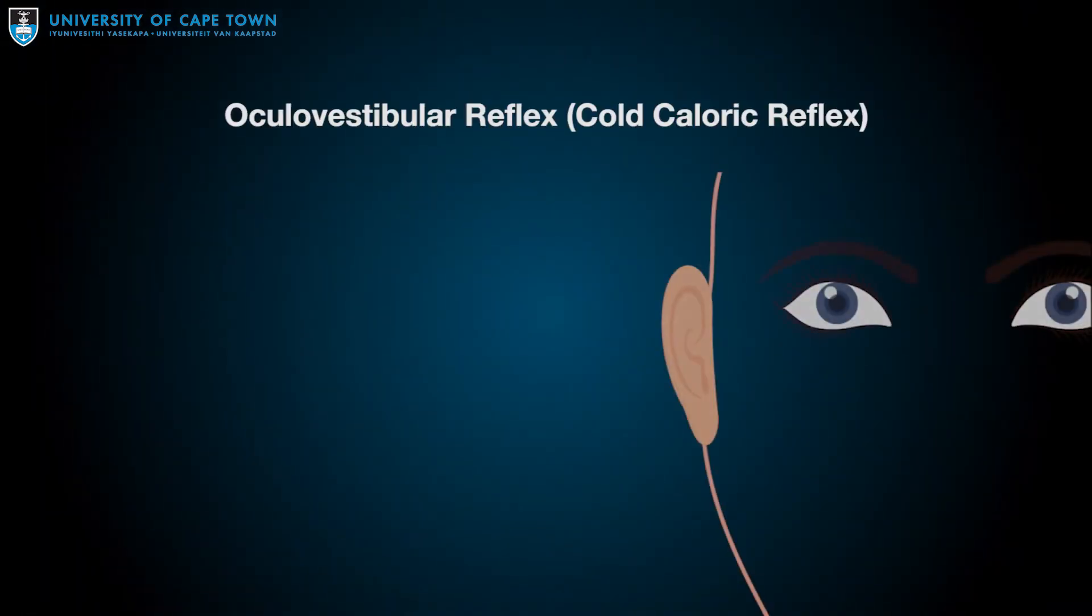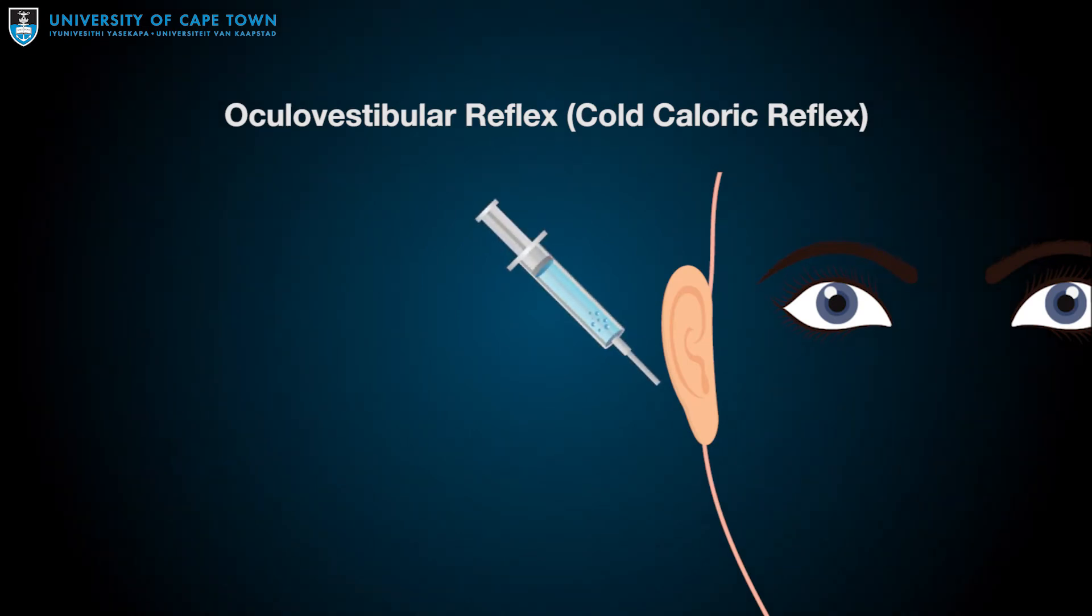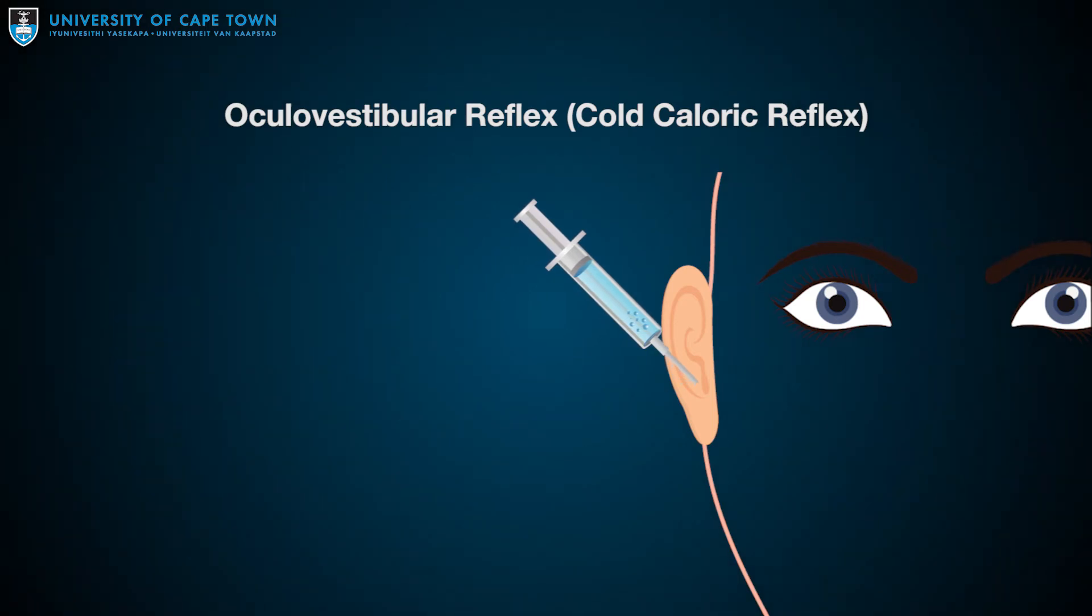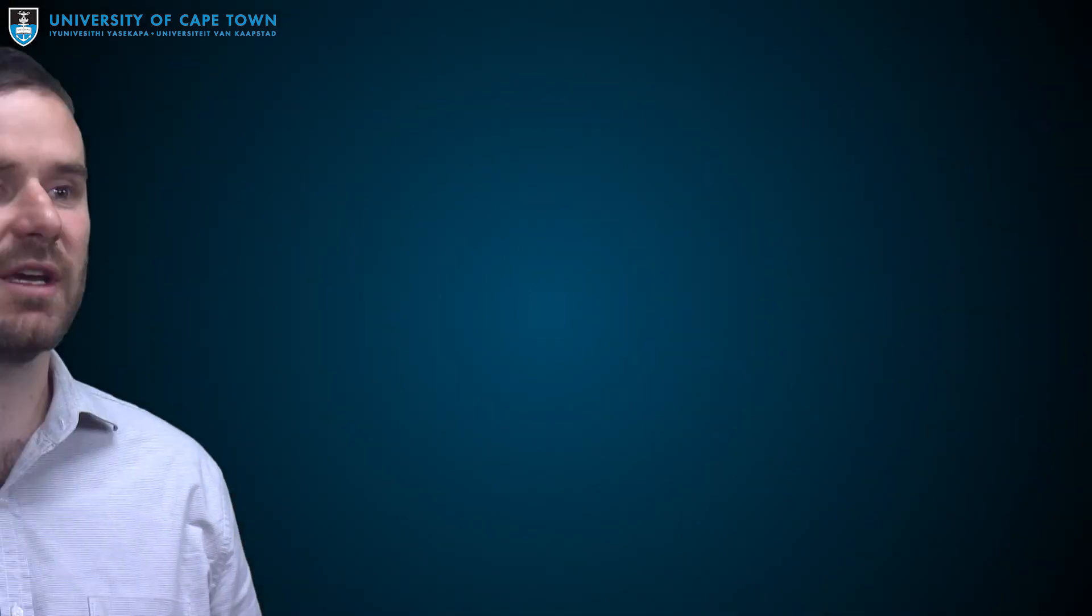Number five: there is no oculovestibular reflex. This is also known as the cold caloric reflex. After elevating the head to 30 degrees, 50 mils of ice cold water is injected down the external auditory canal onto the tympanic membrane, the eardrum, for a minute. The ear canal must be free from wax. The eyelids are kept open throughout this test, and if no ocular movements are seen on either side during irrigation, one can proceed with the next brain death test. Any eye movement, including tiny repetitive twitches called nystagmus, precludes the determination of brain death.